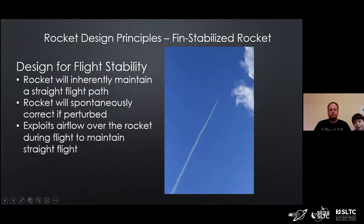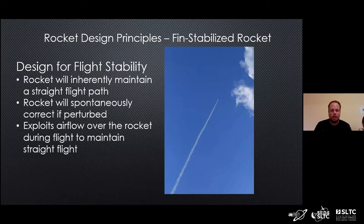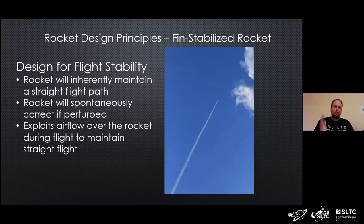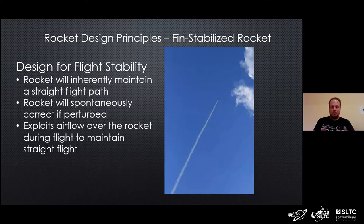Let's get into design. When we design a rocket, our ultimate goal is to design it for flight stability — meaning the rocket will inherently maintain a straight flight path. We don't have any outside control; we're not controlling it via radio from the ground or with computers. Just the shape of the rocket will inherently cause it to maintain a more or less straight flight path. The rocket will spontaneously correct itself if it's perturbed — if it hits some air turbulence, it can on its own correct itself and point its nose back in the direction it was traveling, exploiting the airflow over the rocket.